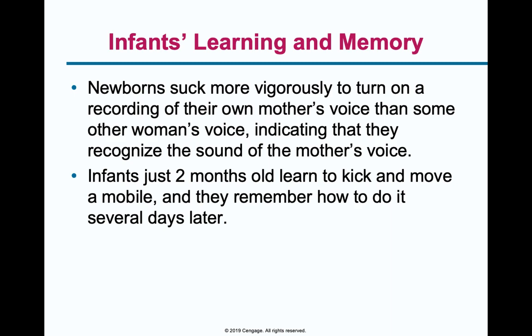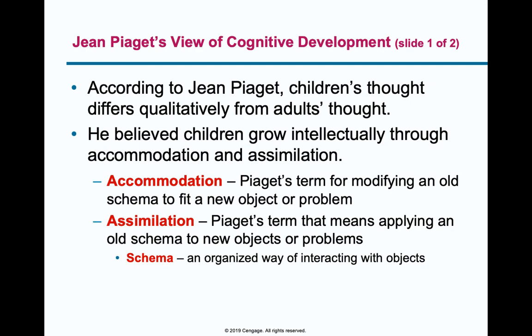Jean Piaget looked at cognitive and intellectual development in terms of stages. He proposed that children grow intellectually through periods of stages as they learn and categorize information into schemas. Schemas are just categories of knowledge in your brain — you have a schema for dogs, for famous baseball players, for cities.